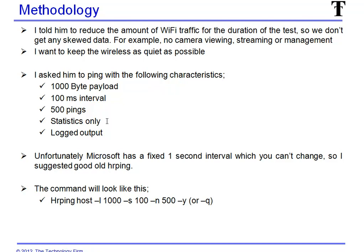While I'm pinging, I just want to see the statistics. I don't need to see ping, reply, ping, reply. And then it'd really be cool if we can log this output. As I just said, Microsoft has a fixed one-second interval — you can't change it. So that's why I suggested HR ping, because we can do all that. The command would look something like this: HR ping, then the hostname or IP, then dash-L — that's an L, the font makes it look like a capital I — one thousand, so there's the length. Dash-S is the interval, 100 milliseconds. Dash-N is the number of pings, which is 500. At the end, we can put dash-Y or dash-Q, which basically means statistics only. The last thing is logging the output, which is simply a dash-F at the end, and you'll see that in a moment.